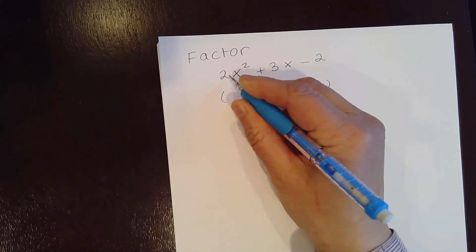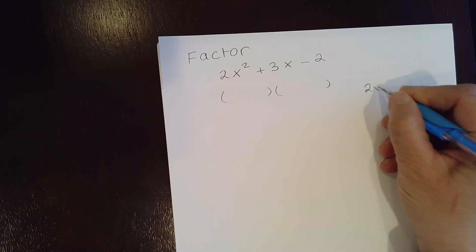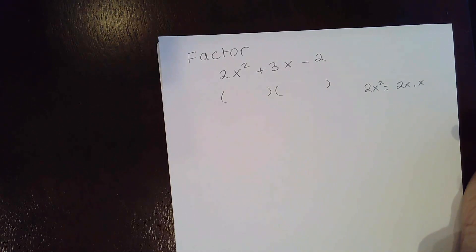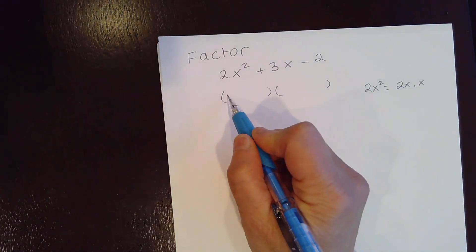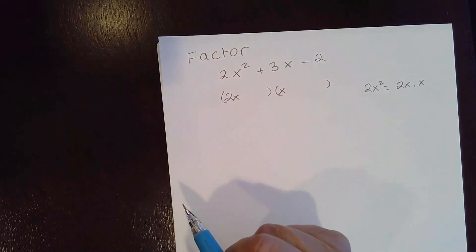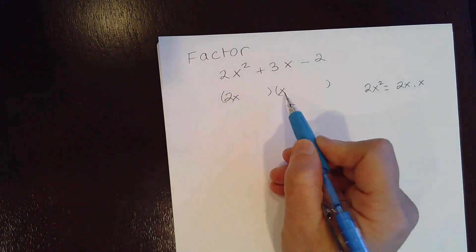Well, to get 2x squared, the only way we can get 2x squared is by multiplying 2x by x. There is no other way. So in order to get 2x squared, we have to have 2x here and x here. So that will give us the first term.